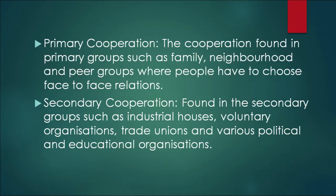There is another basis through which we identify three types of cooperation: primary, secondary, and tertiary. Primary cooperation is found in primary groups such as family, neighborhood, and peer group, where people have close face-to-face relationships. For example, if your father wants to perform certain activities and asks you or your sister to do them, the face-to-face relationship is the major factor in primary cooperation.